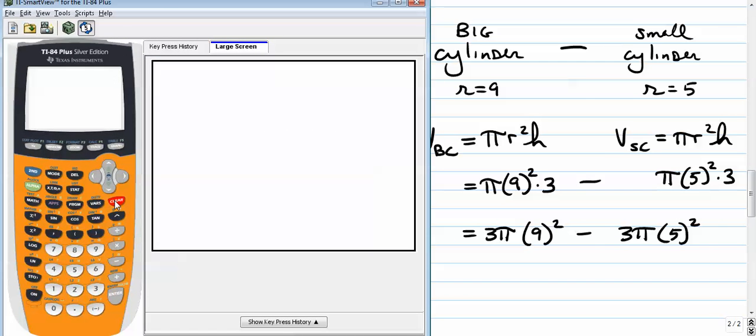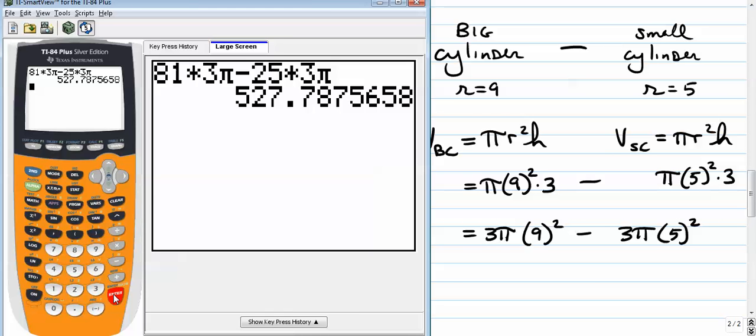We'll just go right to our calculators. Let's see. I'm going to go 9 squared. That's 81. Times 3 pi. Minus 5 squared is 25. Times 3 pi. And you get 527.788.